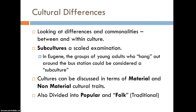A subculture may have the majority of language and behaviors that the dominant culture has, but there are some things they adhere to that are a little different. One example of a subculture in Eugene, Oregon is the young adults who tend to hang out around the bus station downtown. They have a different work ethic, sometimes different technologies and communications, so they would be a subculture.